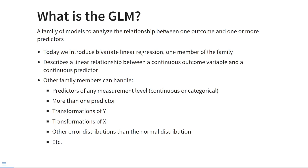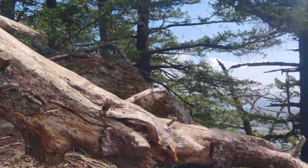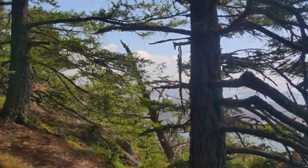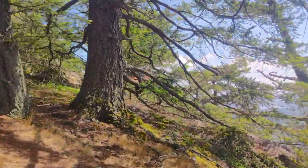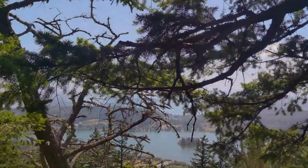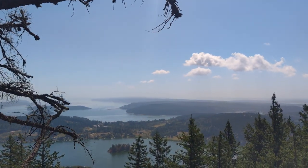The general linear model is a family of models that can be used to analyze the relationship between one outcome and one or more predictors. Today we introduce the most basic element of that family, bivariate linear regression, which describes a linear relationship between a continuous outcome variable and a continuous predictor. Other members of this family include predictors of any measurement level, including continuous or categorical predictors, more than one predictor, transformations of y and x to model nonlinear associations, and other error distributions than the normal distribution. So with all this in mind, let's get into linear regression.